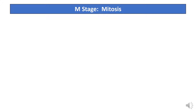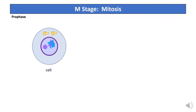Now that we've completed interphase, our cell is moving into the M stage. The first part of the M stage is mitosis, and this is going to consist of four steps. The first step is prophase. I want to bring up a cell and talk about the important players during the rest of the cell cycle. Within the cell is the nucleus, and that's where our DNA is located. Also within the nucleus is a structure called the nucleolus. We also have our genetic material, called our chromosomes or DNA. And finally, we have little structures called centrioles — organelles that are going to help guide the DNA through the steps of mitosis. Together, these are the parts of the cell that are going to undergo a lot of changes during the rest of the cell cycle.